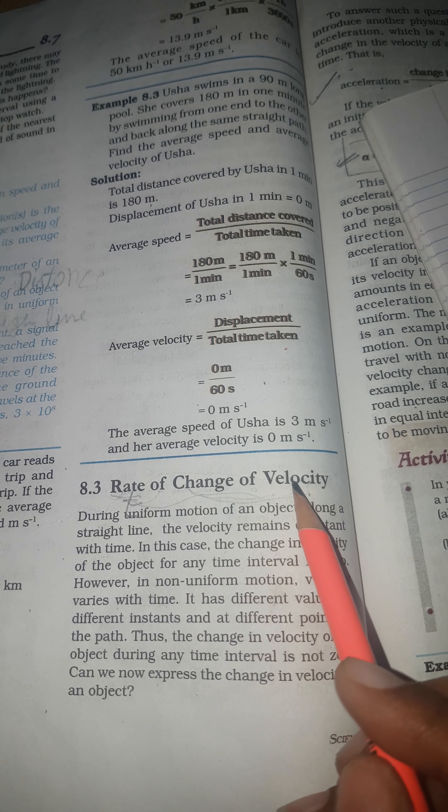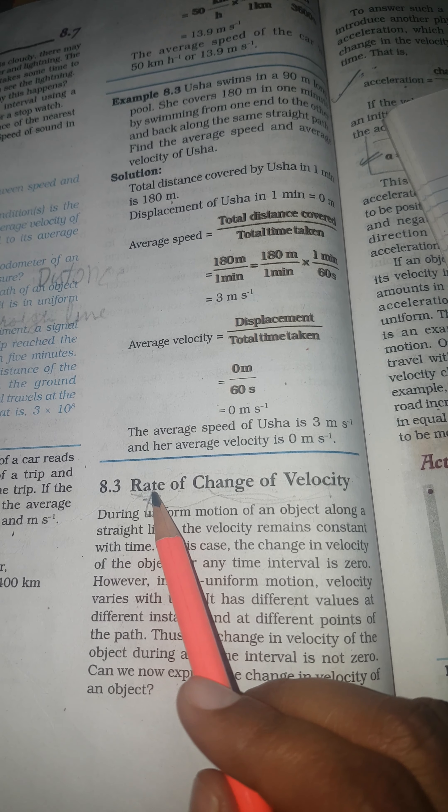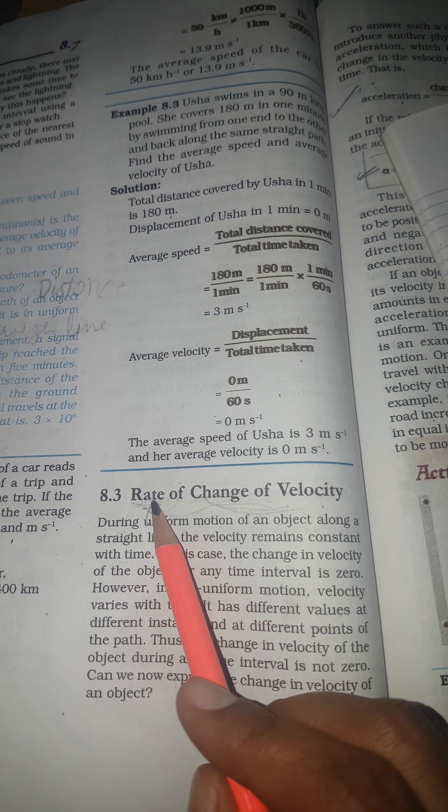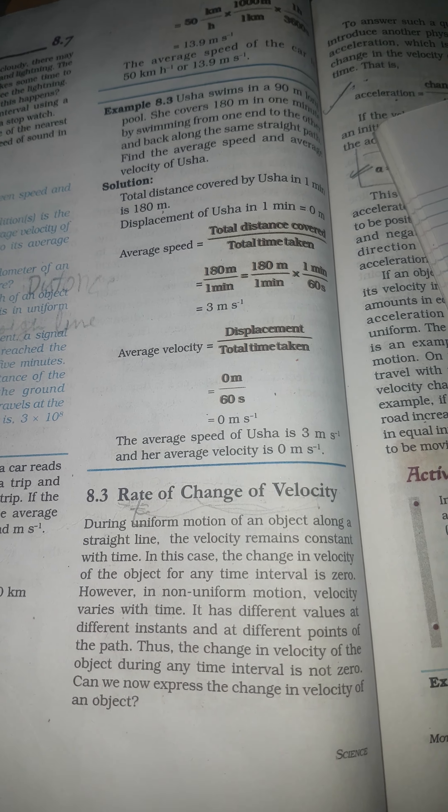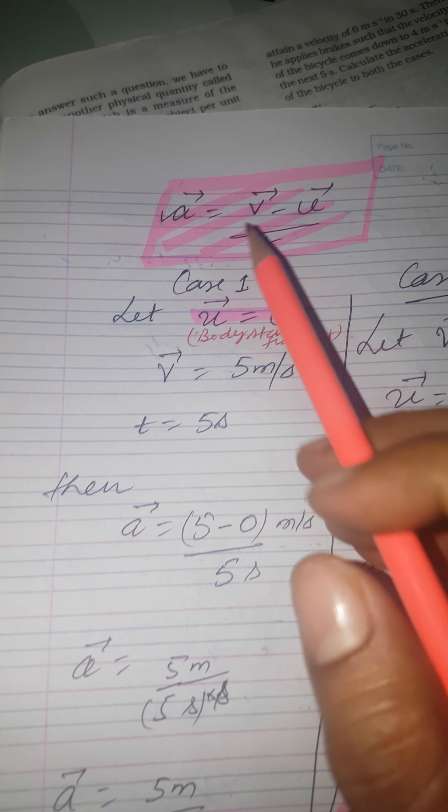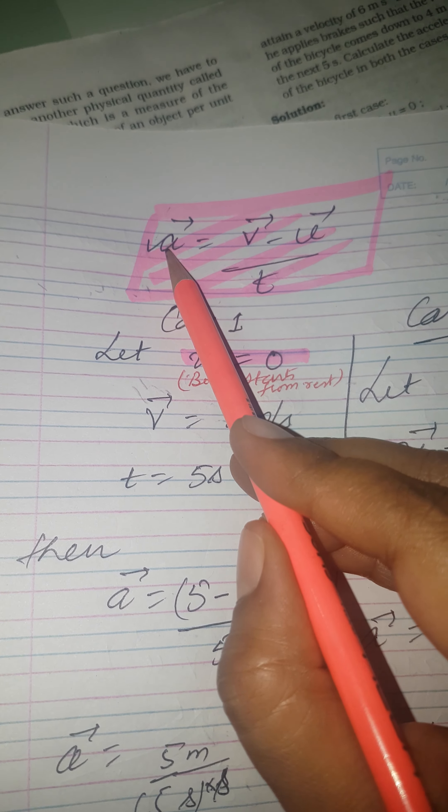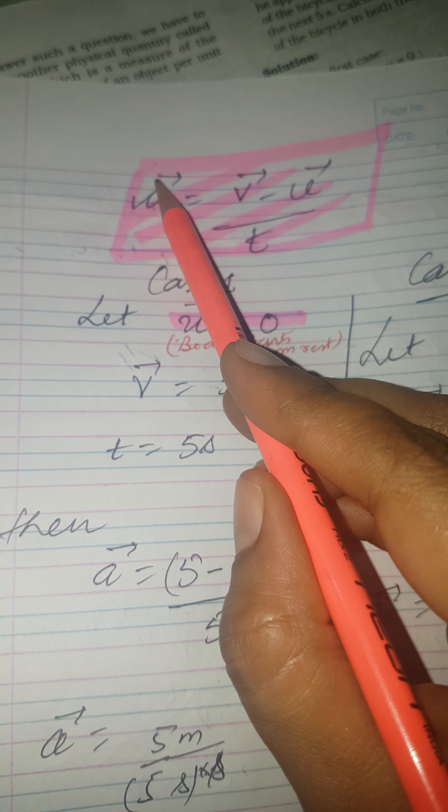To velocity ke change ko agar aap time se divide kar do, then you will get another quantity, another physical quantity which is termed as acceleration. This is acceleration. It is represented by letter 'a'. Over this we put a vector sign.